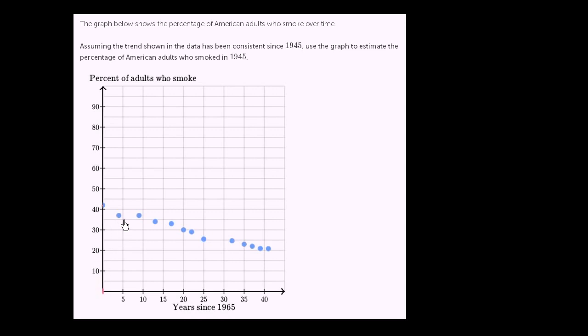And then five years later, this would be 1970. 10 years later, that would be 1975. And they don't sample the data, or we don't have data from every given year. This is just from some of the years that we happen to have.